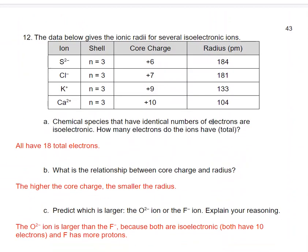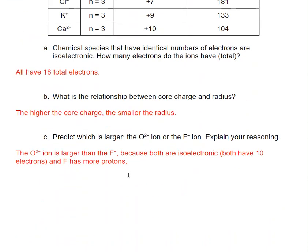This shows ionic radii for several isoelectronic ions — meaning they have the same number of electrons. All of these ions have 18 total electrons. What we see is that the more positive the core charge, the smaller the radius gets. Between the oxide ion (O²⁻) and the fluoride ion (F⁻), the oxide is larger. They're both isoelectronic with 10 electrons, but fluoride has more protons, so a slightly more positive nucleus that pulls those electrons in more tightly.